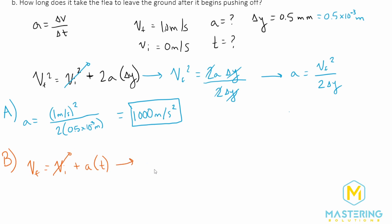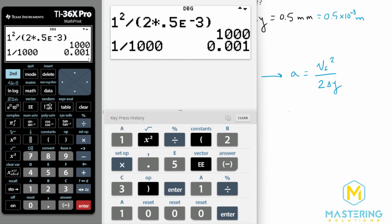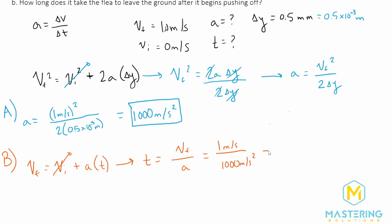So now when we isolate t, we have t is equal to the final velocity divided by acceleration. So now we can plug that in, we have the final velocity is one meter per second divided by a thousand. A lot of you could probably do this in your head, but we have one divided by a thousand. We'll just be moving the decimal place over essentially three. So we have 0.001 seconds.